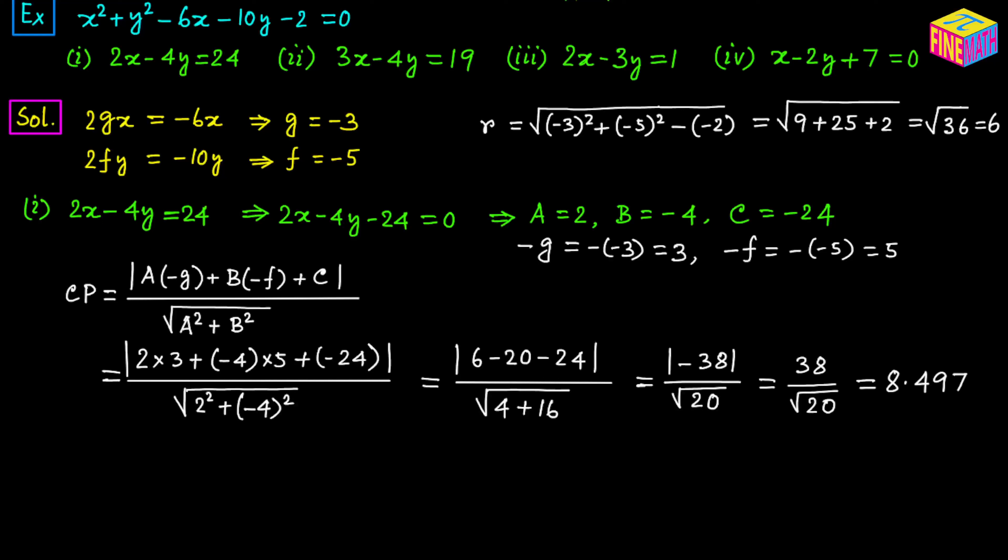So the Cp distance is approximately 8.497 units and the radius is 6 units. Since Cp > r, this straight line — whose equation is 2x − 4y = 24 — is actually outside of the circle. It does not touch or cut the circle. Using the same steps you should be able to evaluate each of the other three straight lines: if Cp = r it will be a tangent line, if Cp < r it will be a secant line, and if Cp = 0 it will be a normal line.